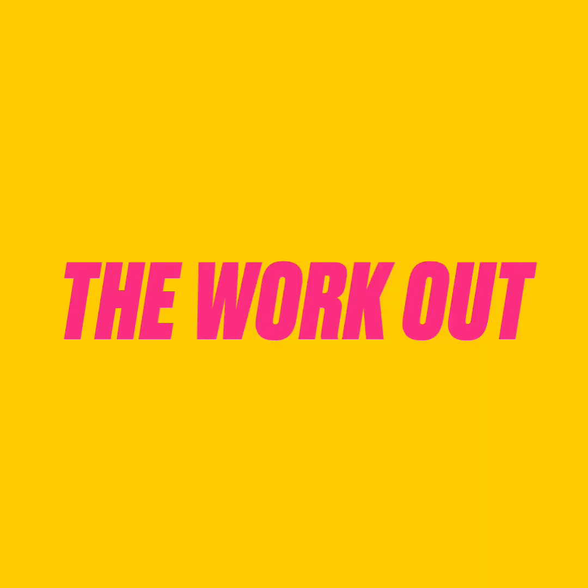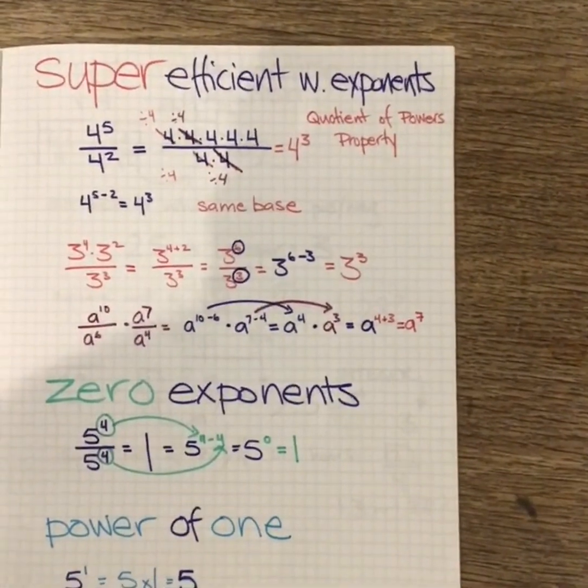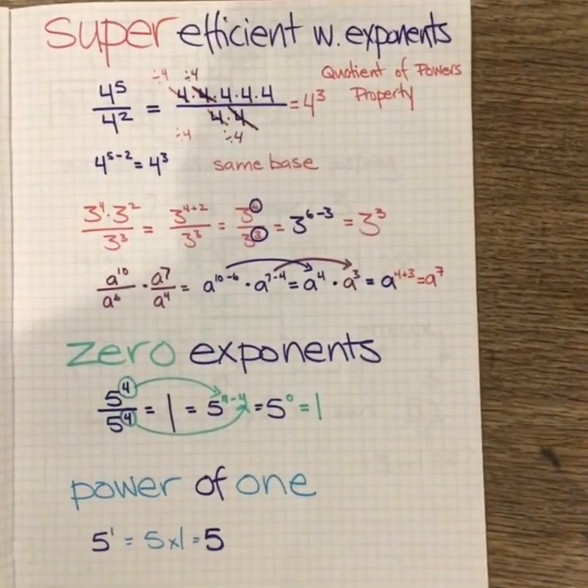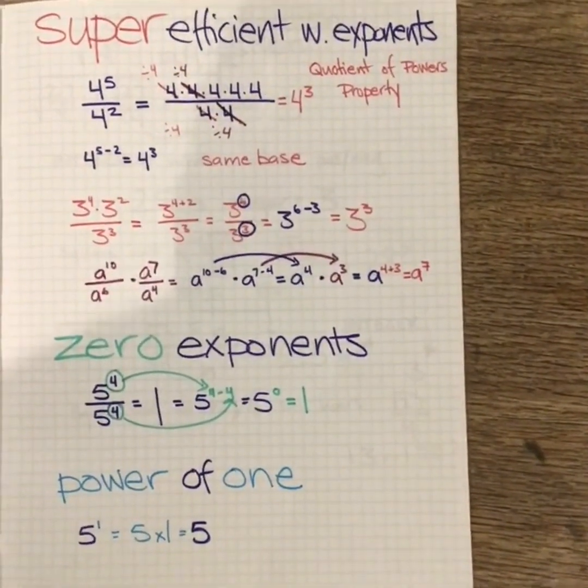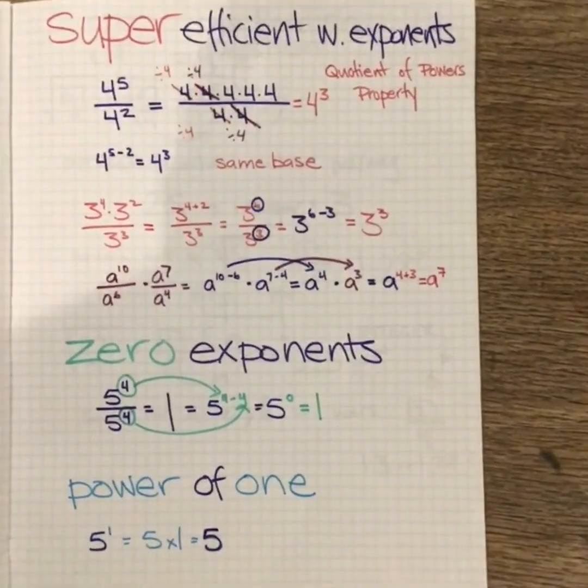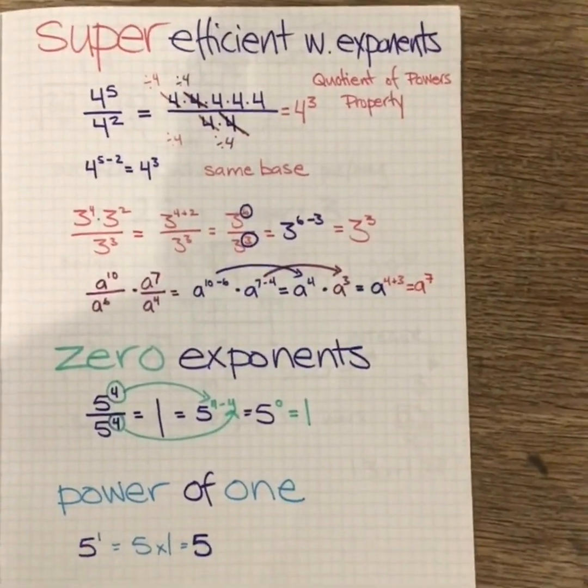And here's the workout. Okay, so here is the working out for the super efficient work with exponents where we're doing the quotient of powers property, which is basically the division but looks like a fraction, touched on our zero exponents and the magic power of one.